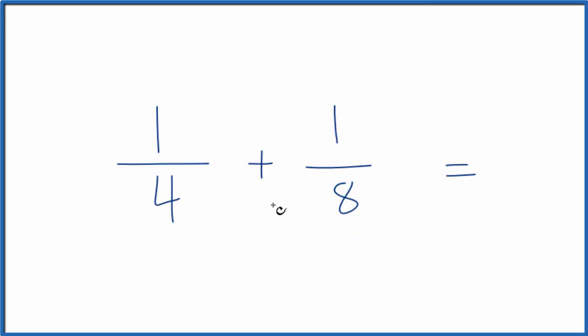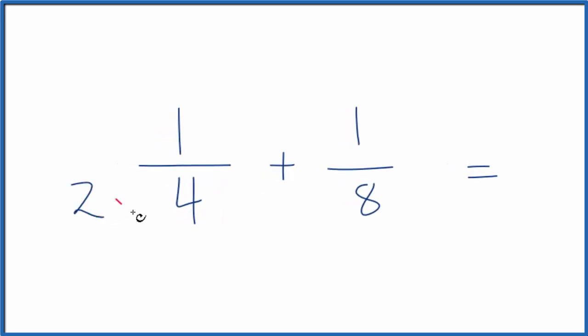First off, to add fractions, we need the denominator to be the same. So we know that 4 will go into 8 twice. 2 times 4 is 8. So if we multiply 4 by 2, that would give us the same denominator.